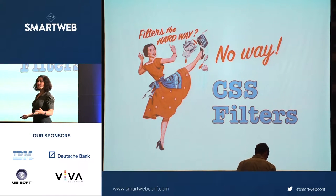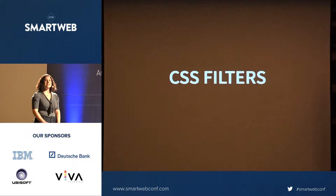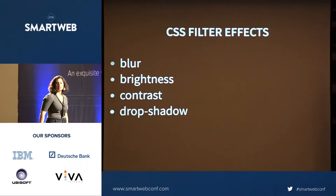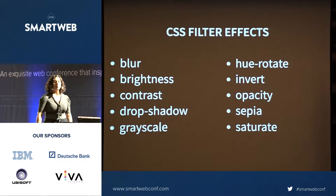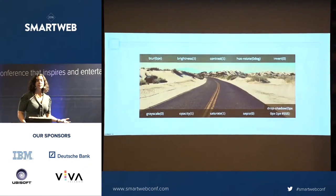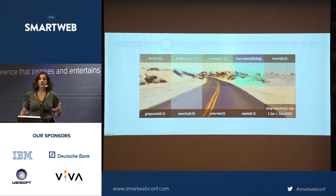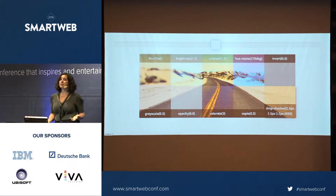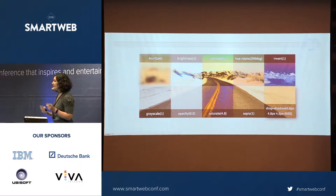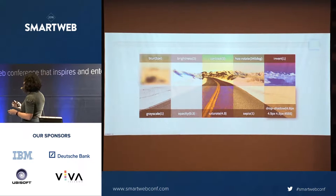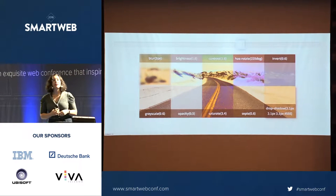CSS filters are basically one line of code, maybe two if you need that WebKit prefix. We have 10 filter options. All you need is one CSS property — filter — and you need that WebKit prefix, or you can use auto-prefixer, to apply a variety of effects. You can use these together, combined in a space-separated list, so you can have brightness, contrast, and hue-rotate applied together.